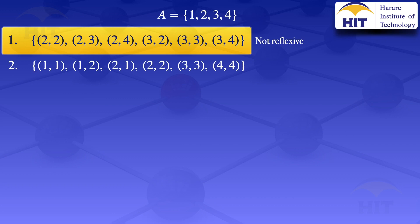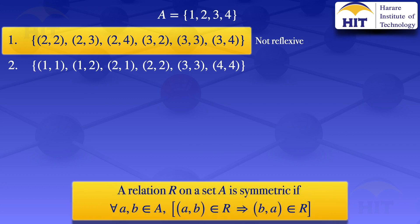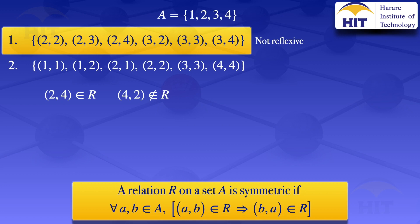I now move on to checking if the relation is symmetric. By definition, a relation R on a set A is symmetric if for all a, b in A, if the ordered pair (a,b) is in the relation, then the ordered pair (b,a) is in the relation. Looking at (2,4) — it's in the relation — we check if (4,2) is in. We don't have (4,2) in that relation, so the condition is violated. We conclude that the relation is not symmetric.